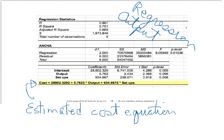We could take the same data and run it through a linear regression, and you'll notice that we get somewhat different estimates. Plus, with regression, we can have more than one explanatory or independent variable.